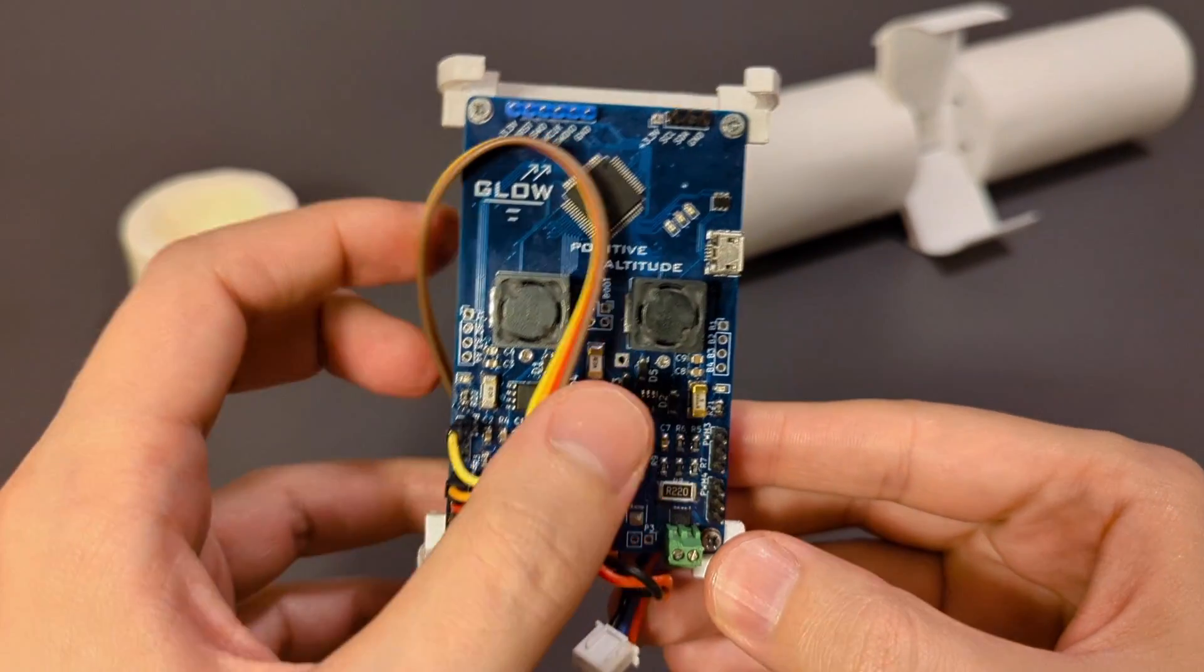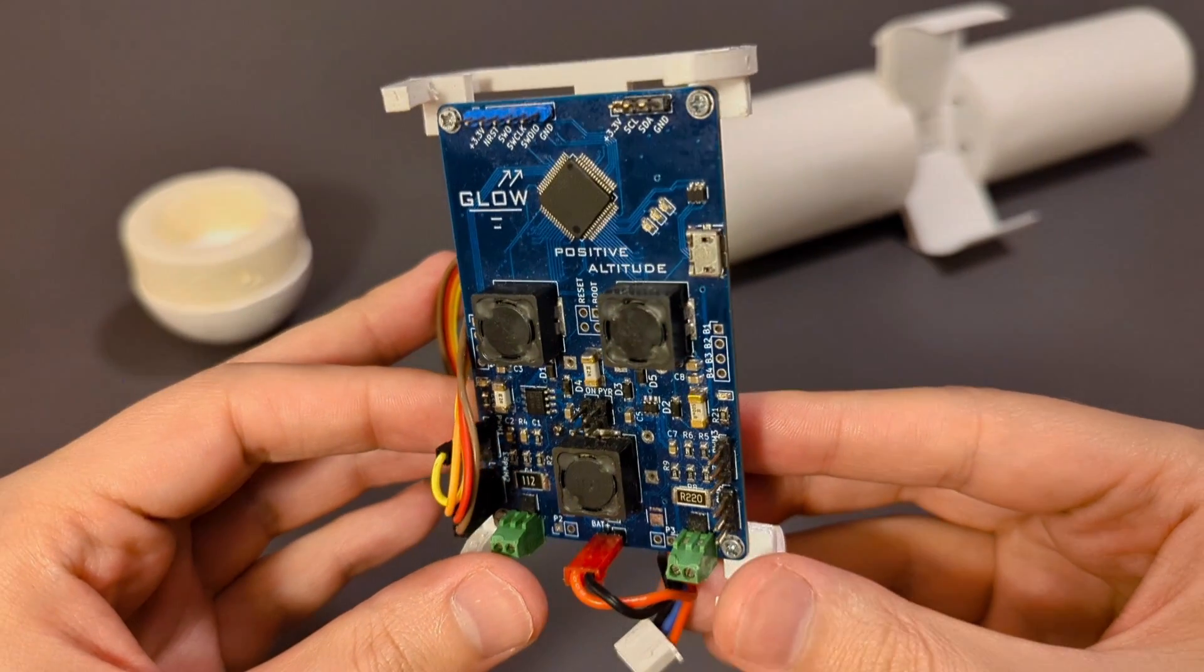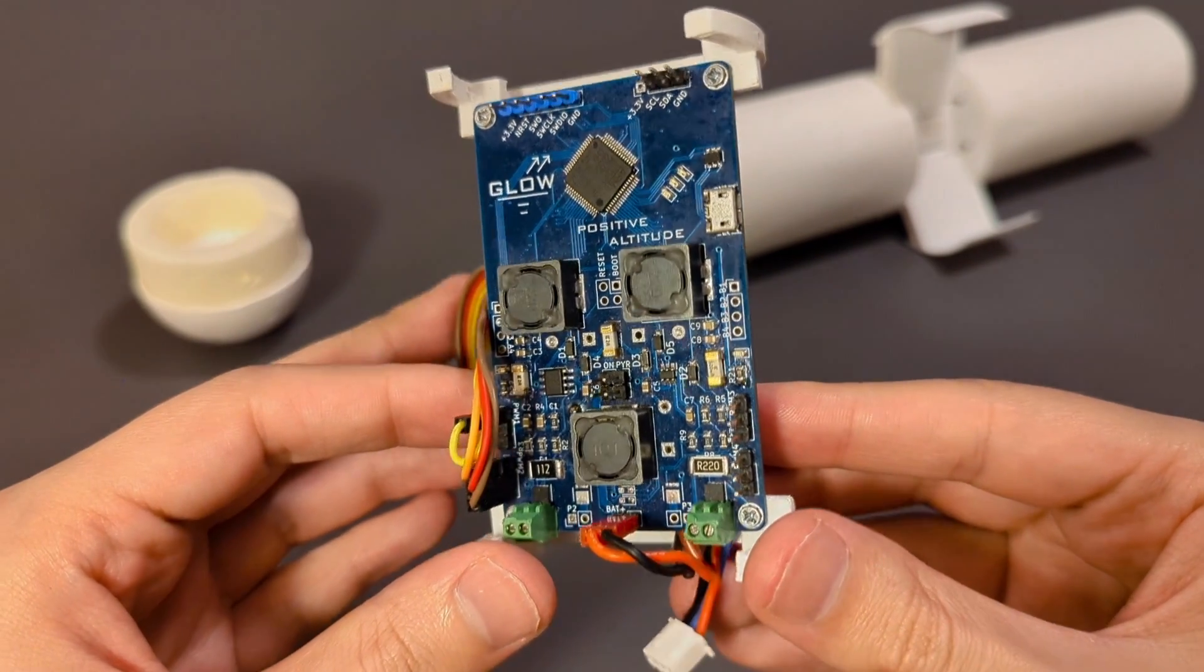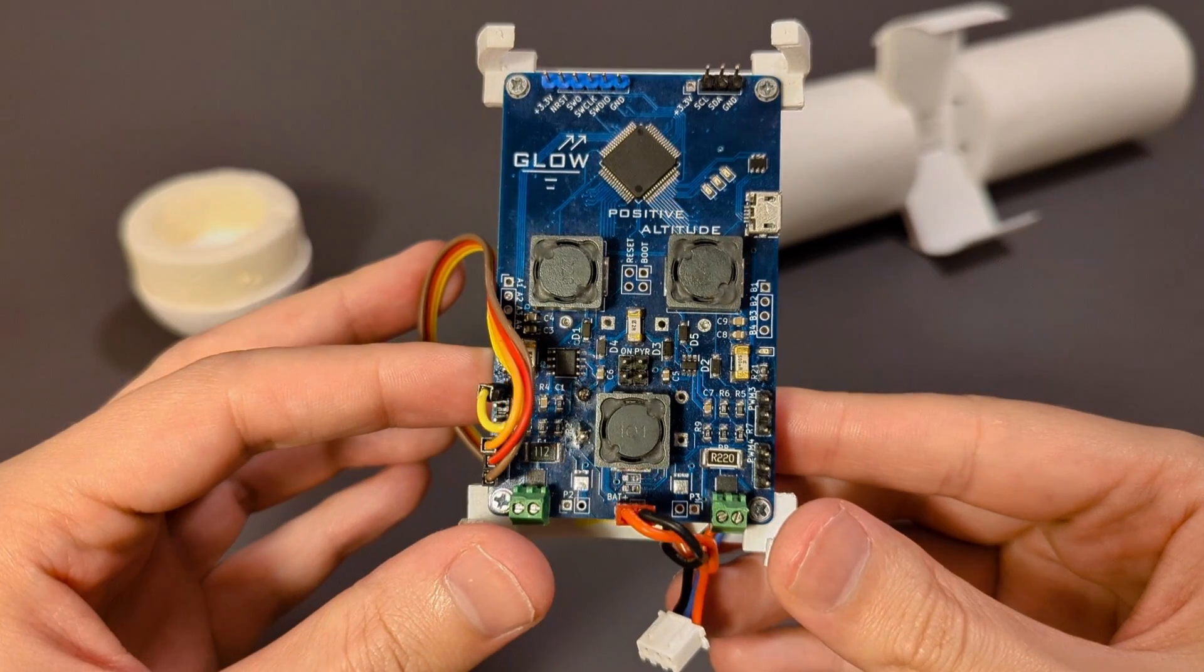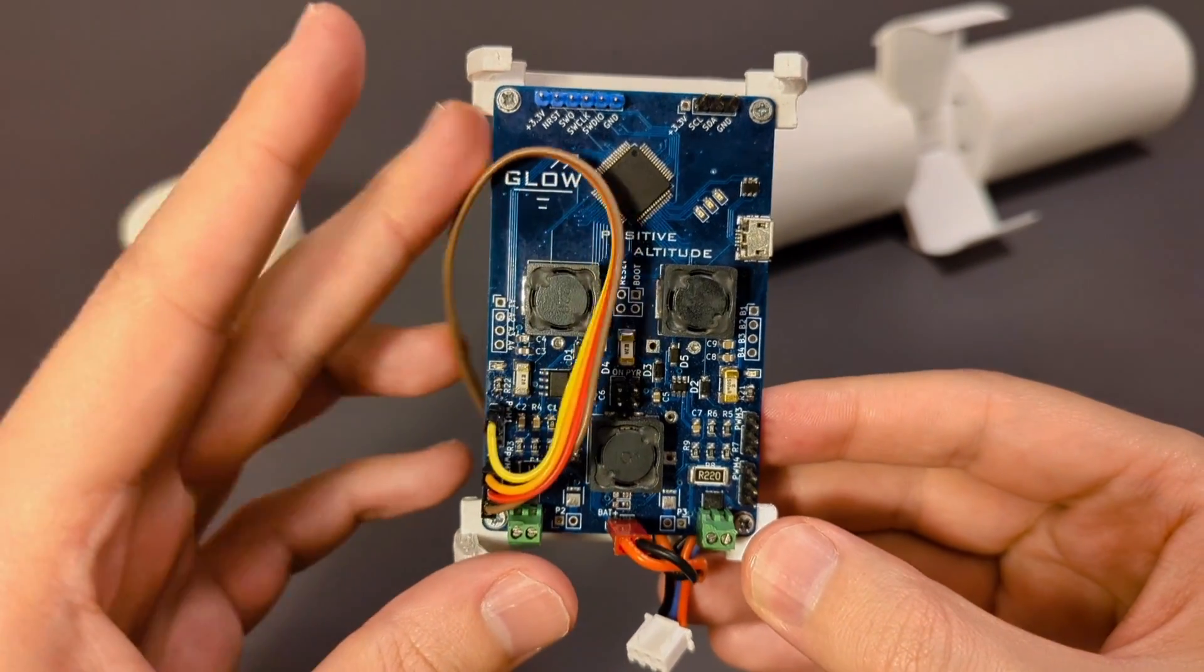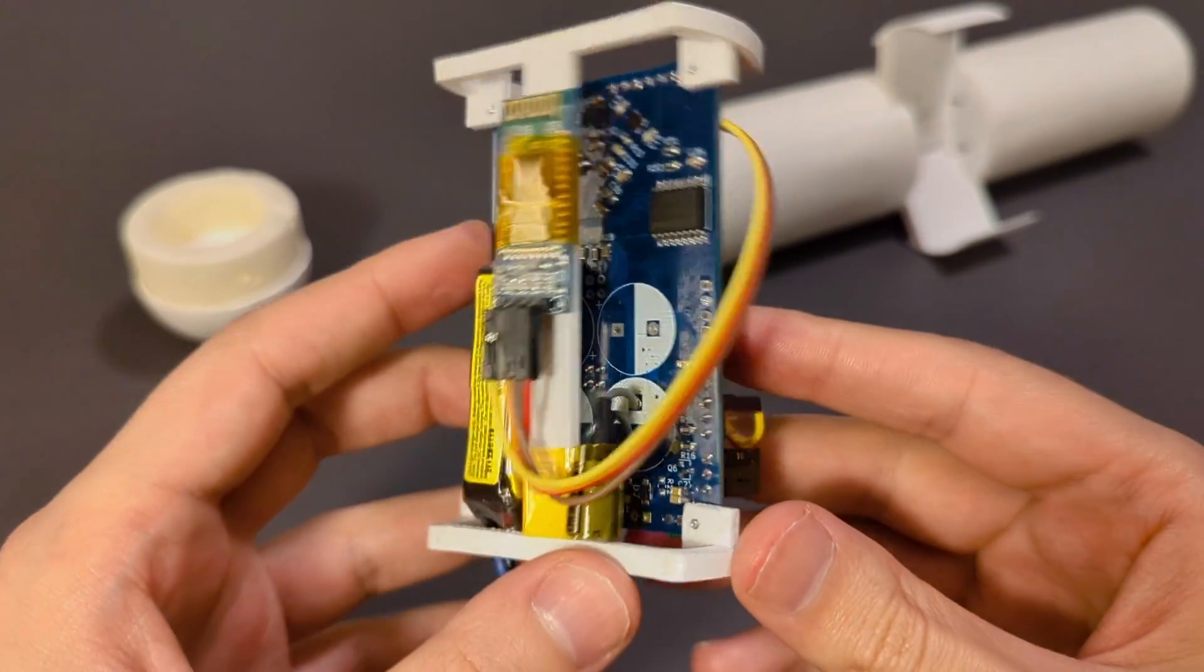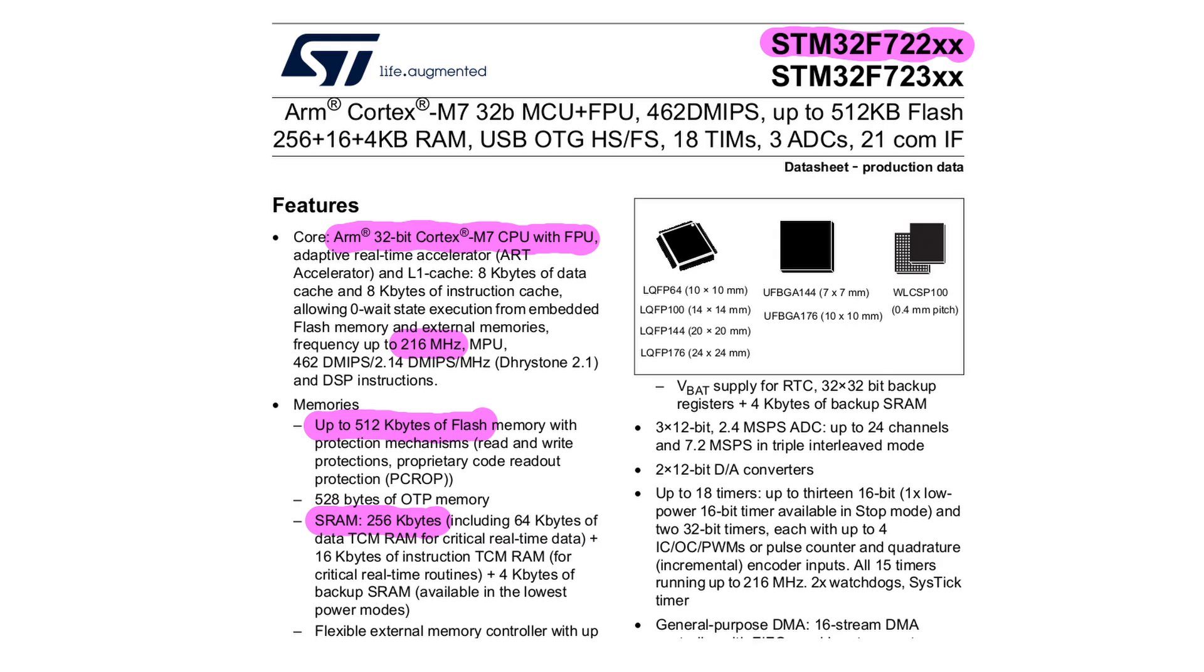I started with building electronics. This is what the electronics module looks like. The main component here is the flight computer I designed for this rocket. This flight computer is built around STM32F7 microcontroller. It's a great powerful microcontroller with double precision FPU and lots of memory.